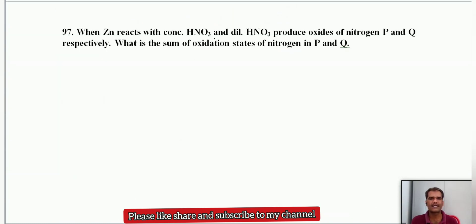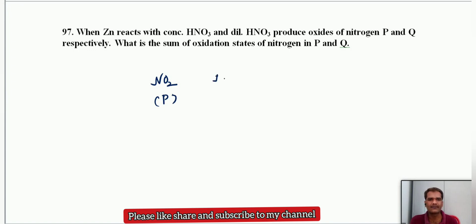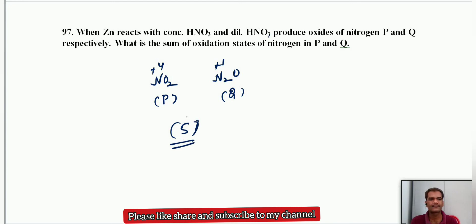When zinc reacts with concentrated nitric acid, it gives nitrogen dioxide (P). When zinc reacts with dilute nitric acid, it gives nitrous oxide (Q). The sum of oxidation states of nitrogen in P and Q: NO2 is +4 and N2O is +1. Sum = +4 + +1 = 5.